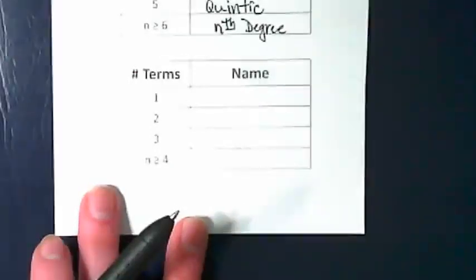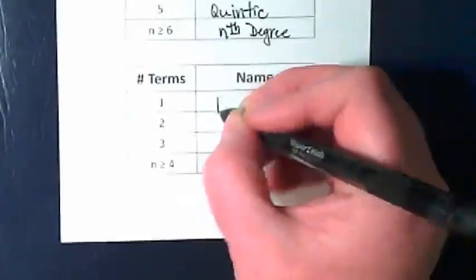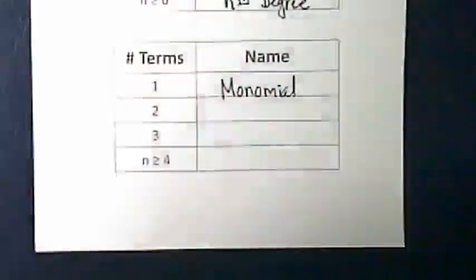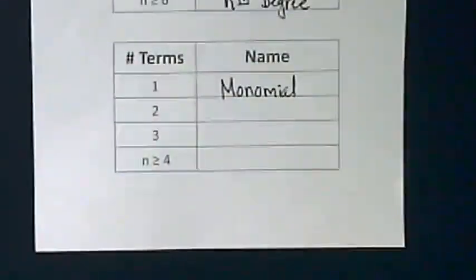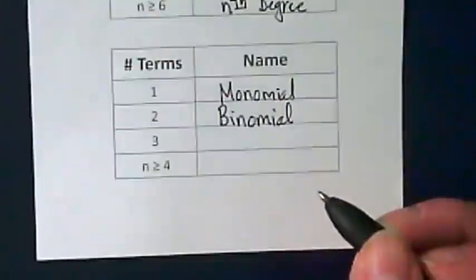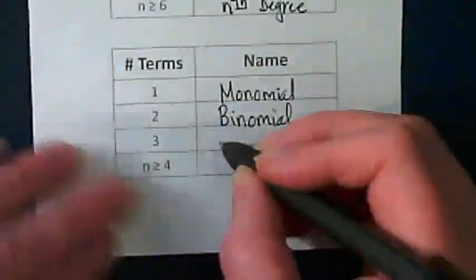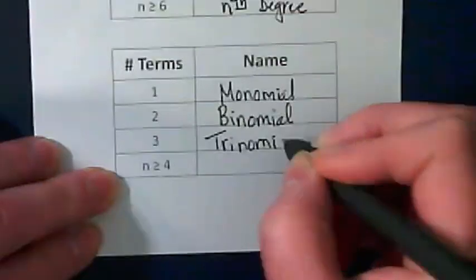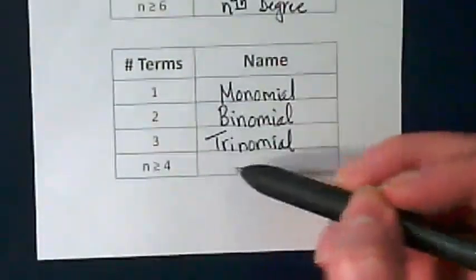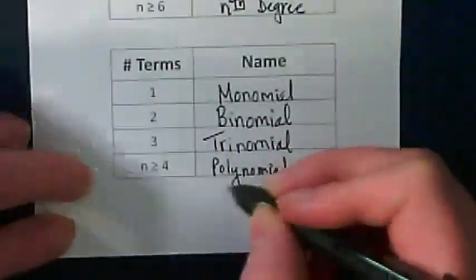There are four last names for polynomials based on the number of terms they have in them. If there's just one, it's a monomial. If it's two, binomial. If it's three, trinomial. And for anything that's four or greater, we go with the word polynomial. The root for poly means many.